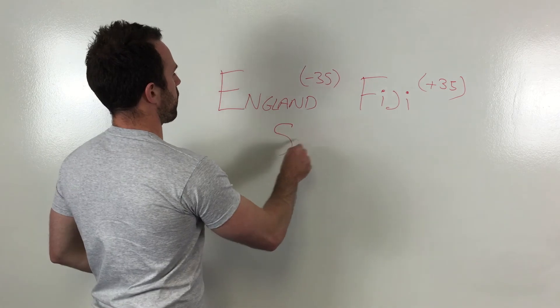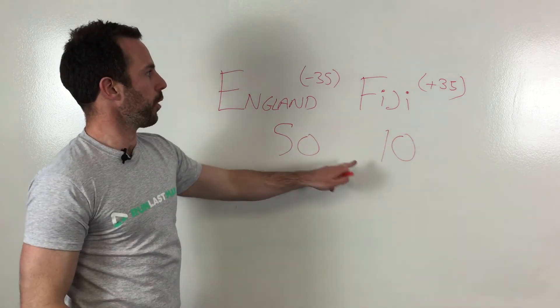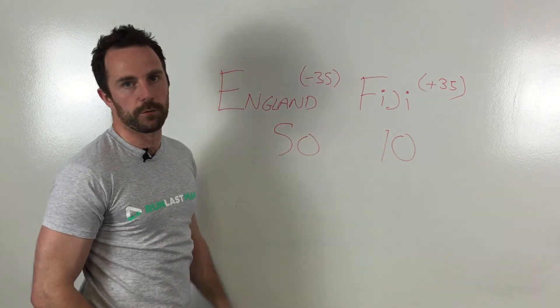So for example, if the score actually finishes 50-10, that means England have won by 40 points, greater than 35. If you picked England, you've won. If you went for Fiji, you've lost and you're out.